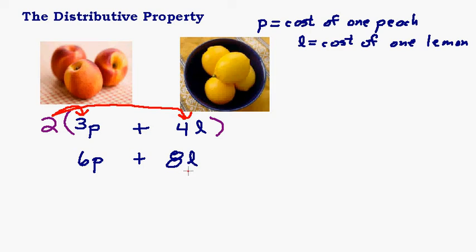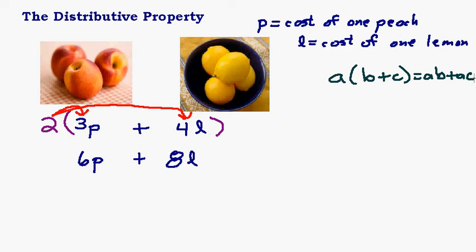So this is the distributive property — this is how you simplify something with parentheses. The official distributive property says: a times the quantity b plus c equals a times b plus a times c. This a that's outside is multiplied by everything in the parentheses, so you take a times b plus a times c.